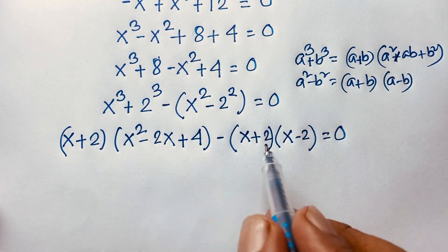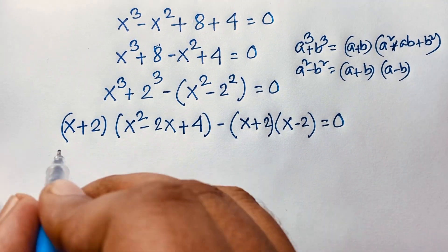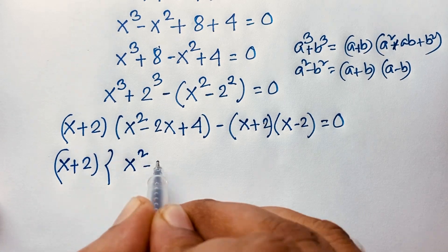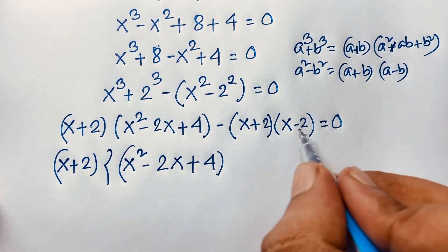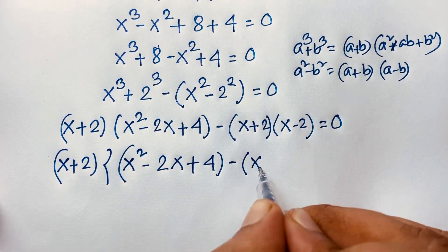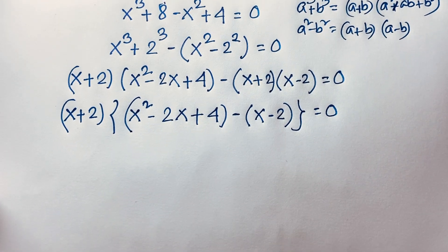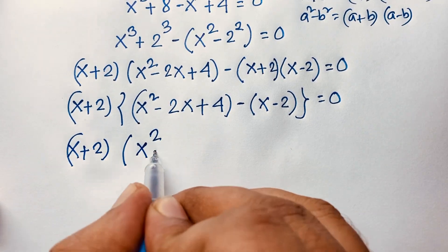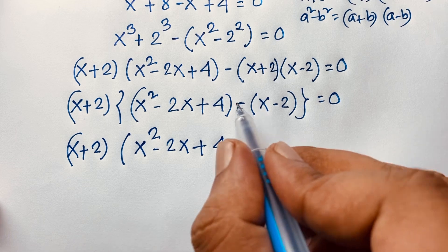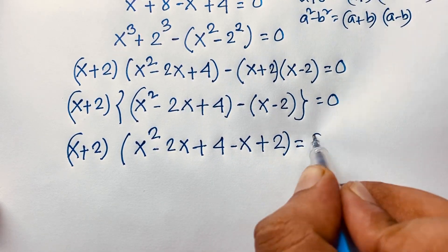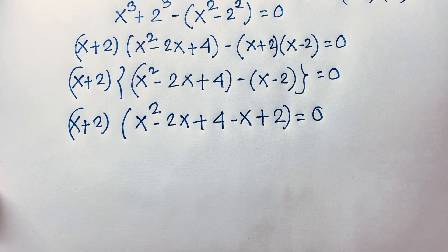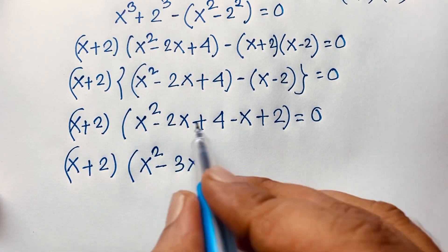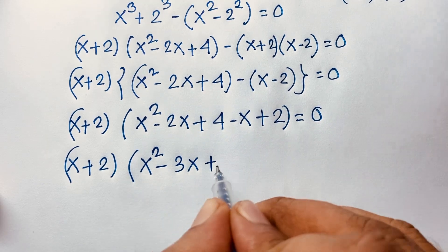Here x plus 2 appears in both terms, so x plus 2 is common. Dividing through: x plus 2 times x squared minus 2x plus 4, combined with the x minus 2 term, gives us x plus 2 times x squared minus 3x plus 6, since 2x plus x is 3x and 4 plus 2 is 6, all equal to 0.